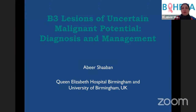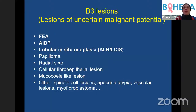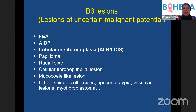Today I'm going to talk about B3 lesions — lesions of uncertain malignant potential — a difficult area in breast pathology, particularly for those doing breast screening pathology, and we'll discuss diagnosis and management. We assess all breast core biopsies and categorize them into five categories: B1 (inadequate or normal), B2 (benign, like fibroadenomas and cysts), B3 (lesions of uncertain malignant potential), B4 (suspicious for malignancy), and B5 (straightforward cancers), divided into B5A (in situ carcinoma) and B5B (invasive cancer).